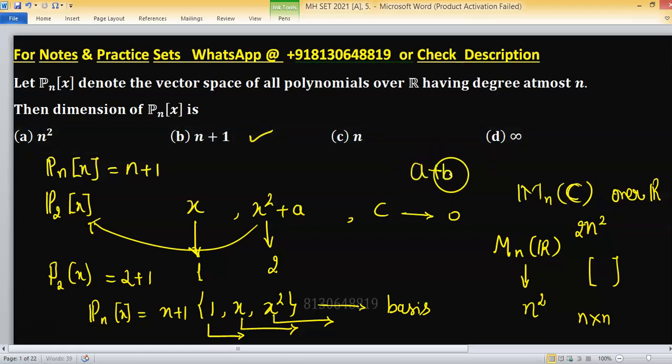Because if you take a complex number a plus b alpha, then this is coming from real and this is coming from real, so for each complex number you are independent of two choices, that's why dimension will be 2n square.